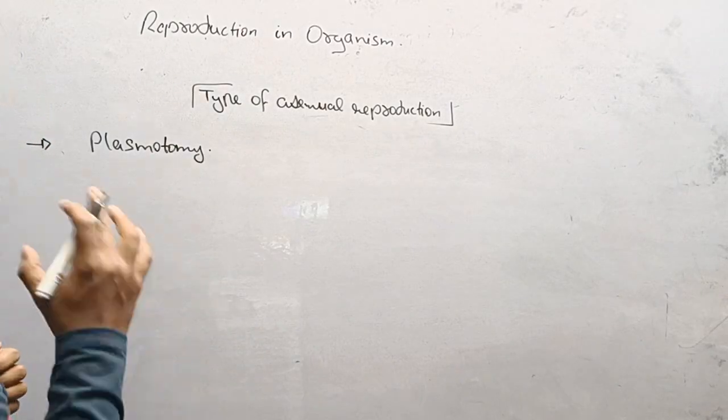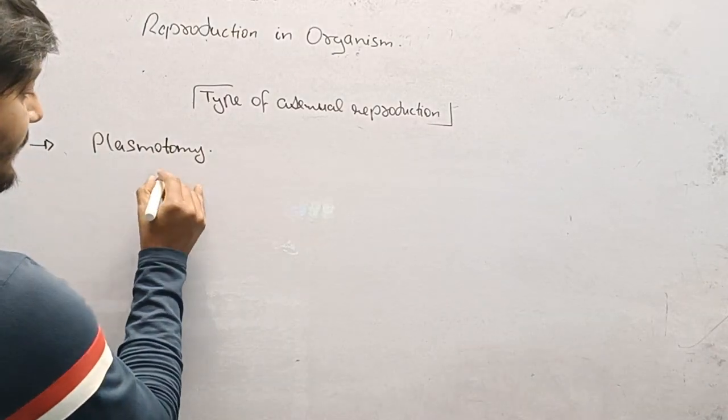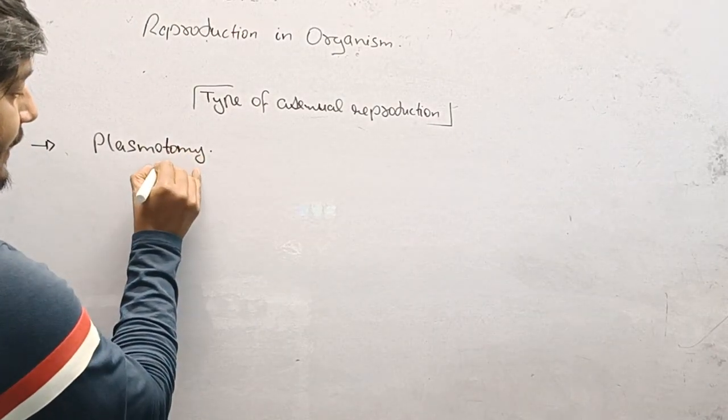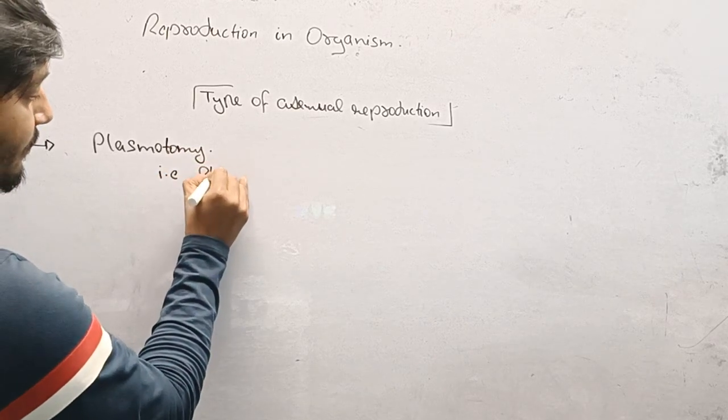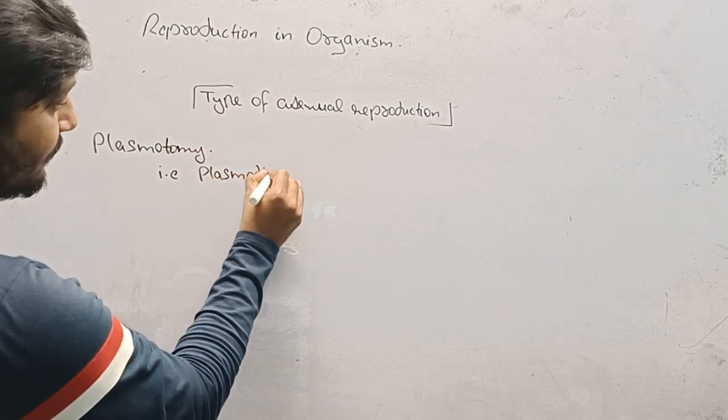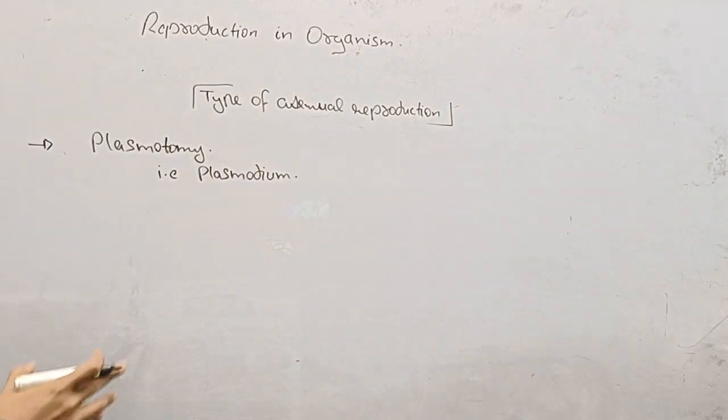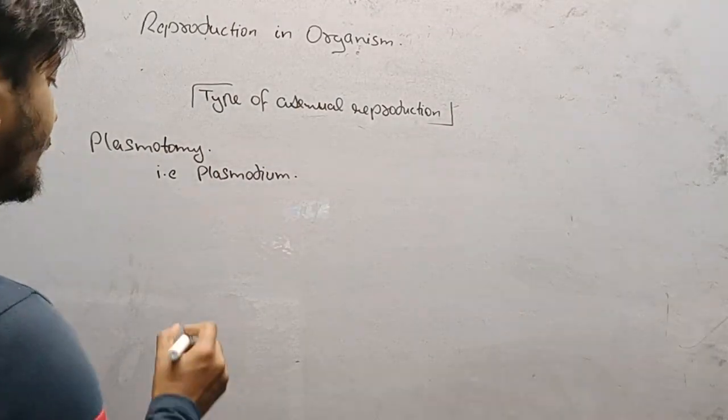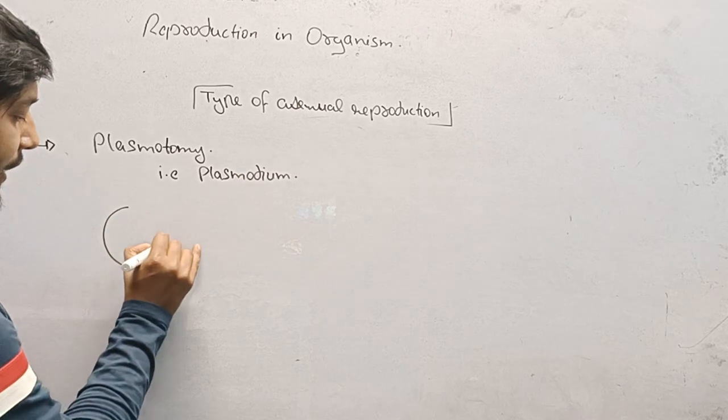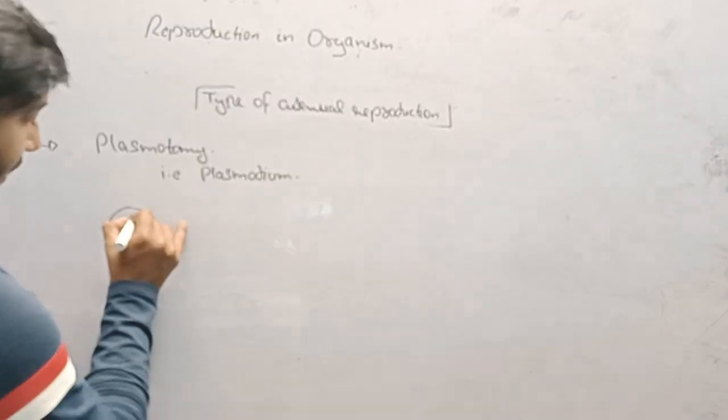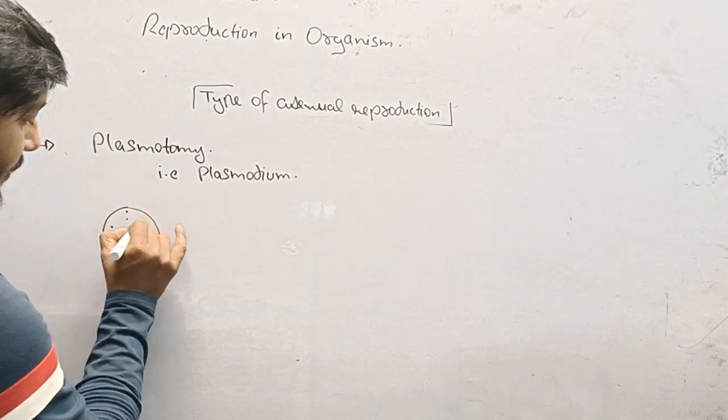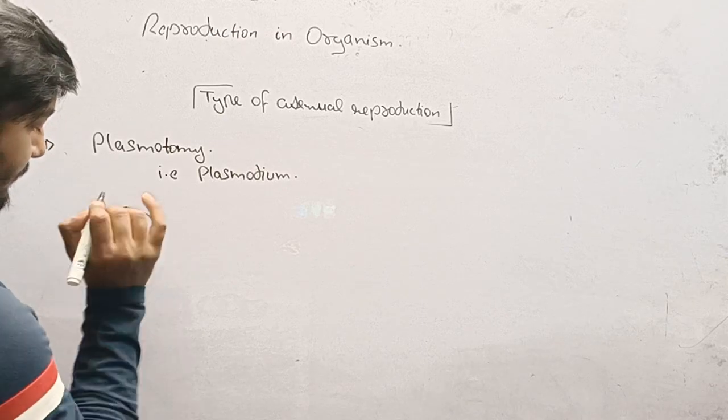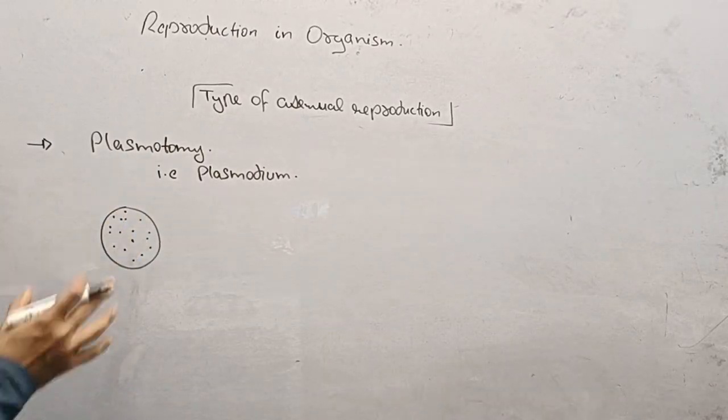We can understand this by giving a diagram. This process is seen in the case of plasmodium. In the case of plasmodium, when we see its body, it has different types of nuclei.